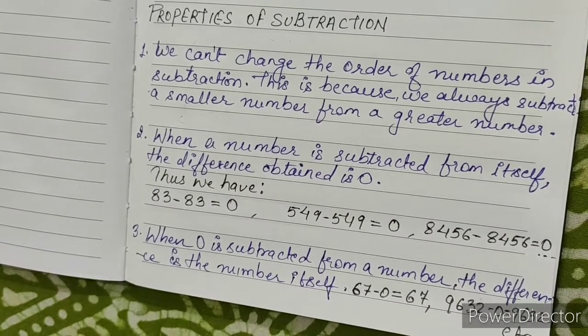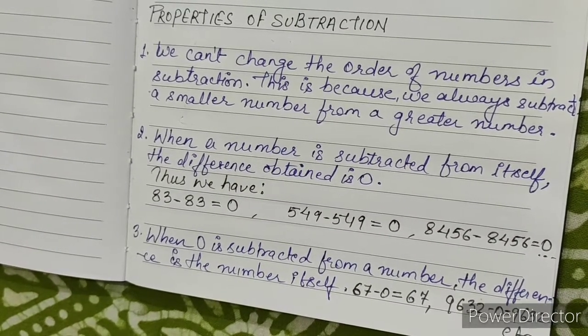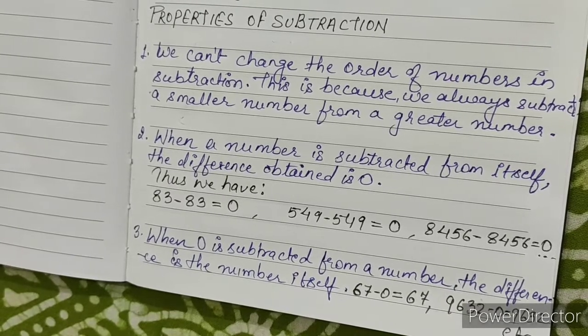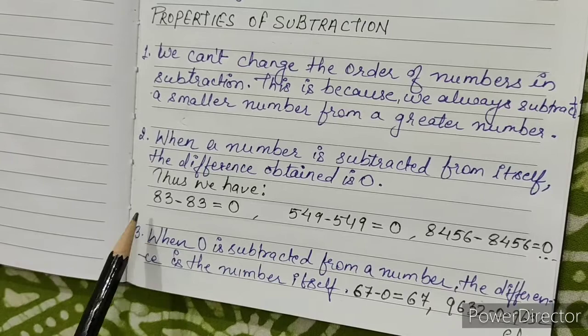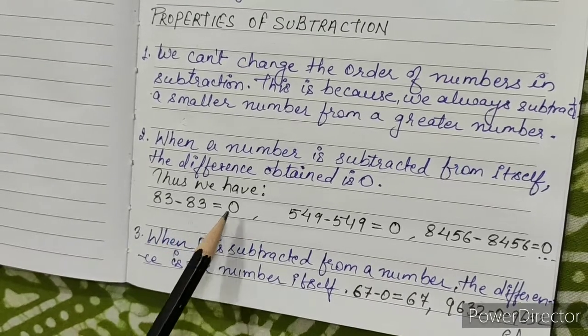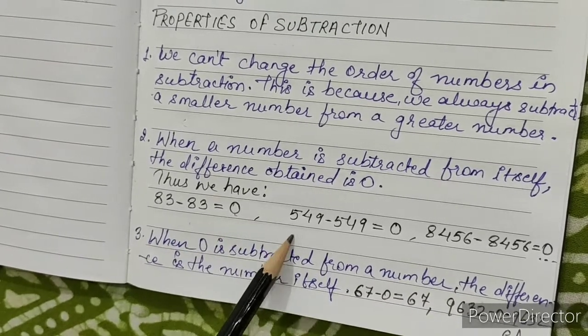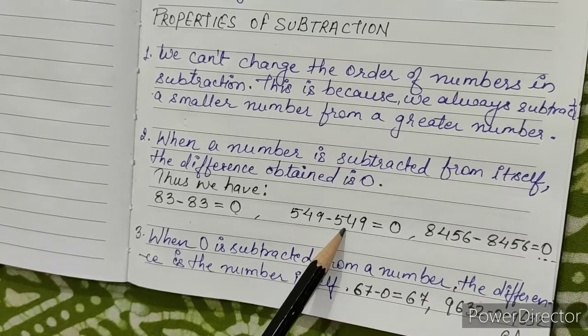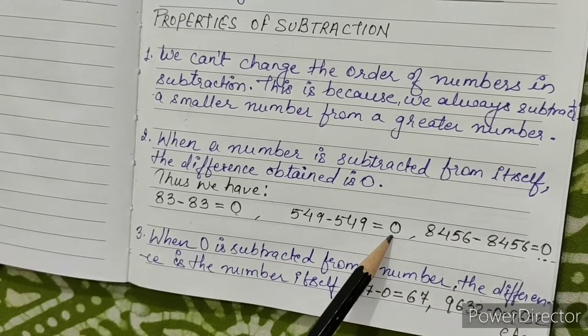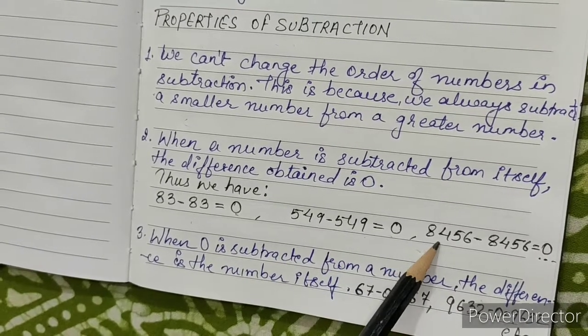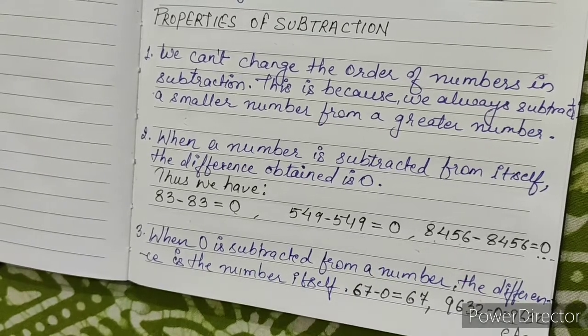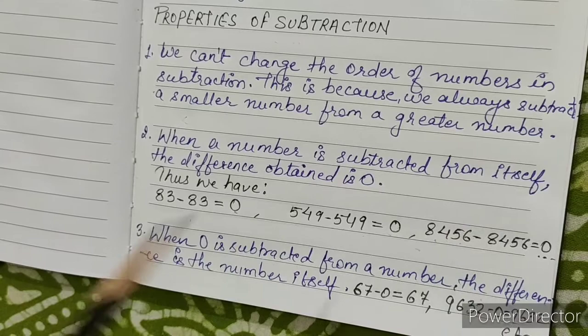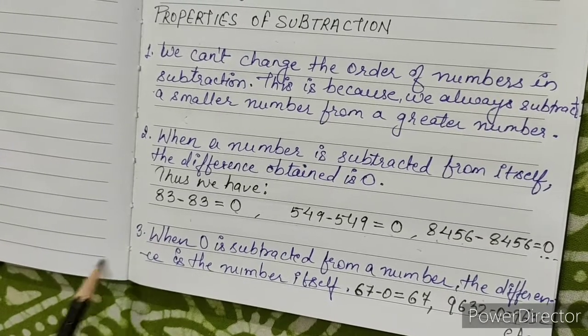Property 2: When a number is subtracted from itself, the difference obtained is 0. For example, 83 minus 83 is 0, 549 minus 549 equals 0, and 8456 minus 8456 equals 0.